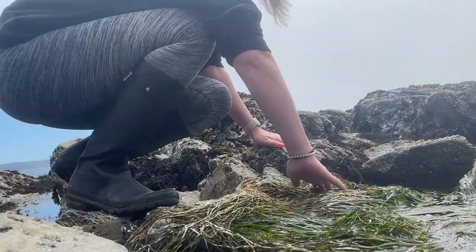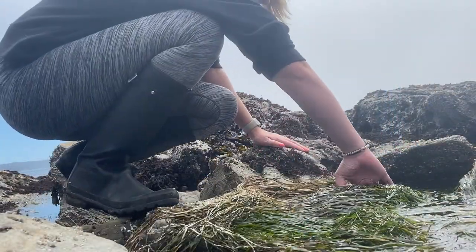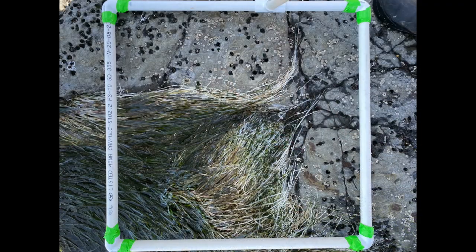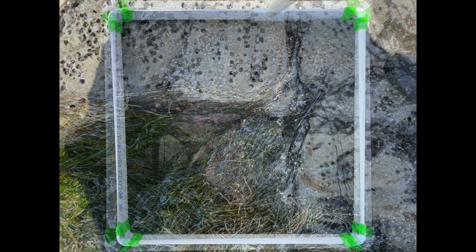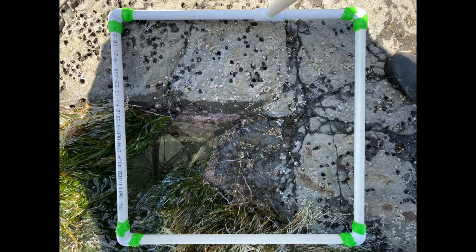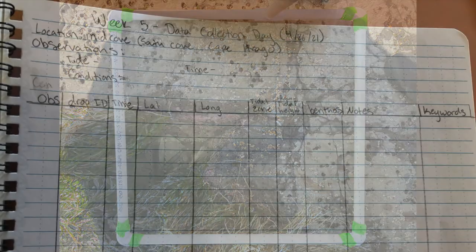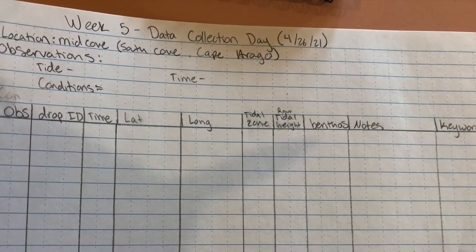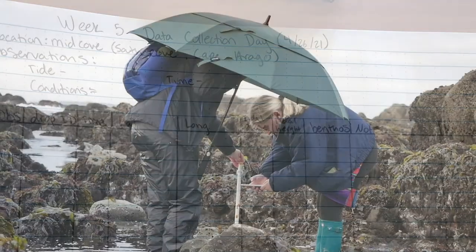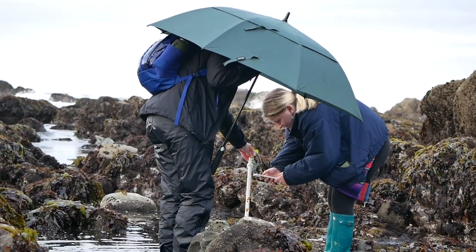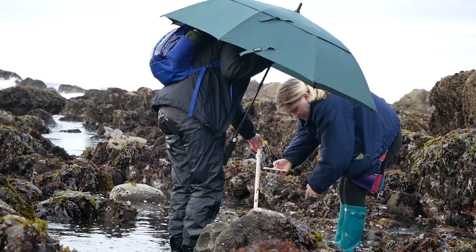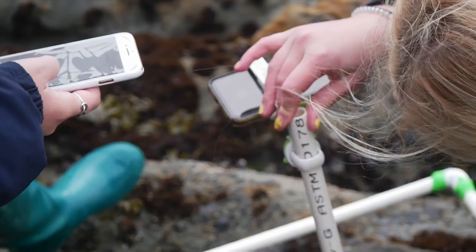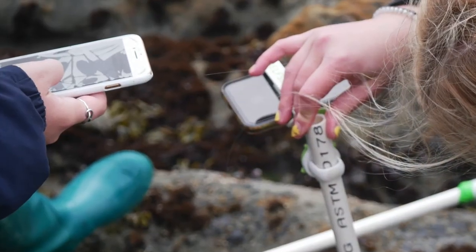Additionally, in areas where surfgrass was present, we took two photos — one with the surfgrass untouched and another with the surfgrass pushed backwards to reveal what was underneath. Along with the photographs, metadata of the specific photo site was taken, which included a unique photo ID number, coordinates, tidal height, tidal zone, weather conditions, and other pertinent information to aid in creating a comprehensive reference for this study site.